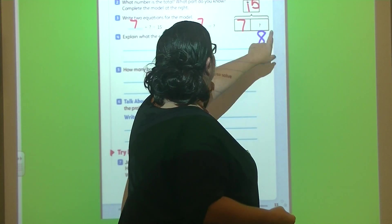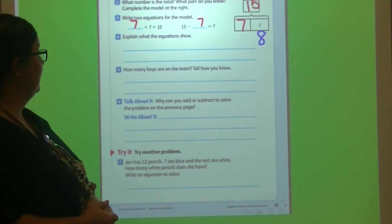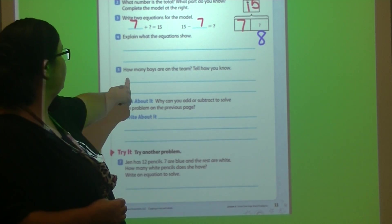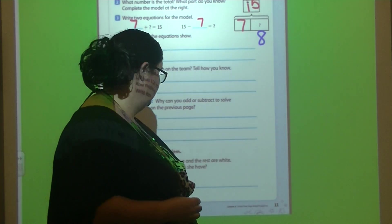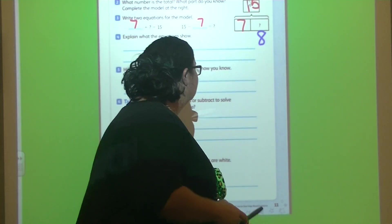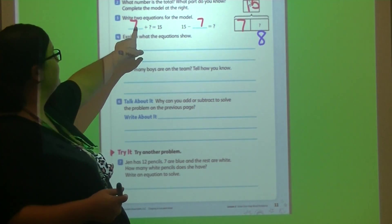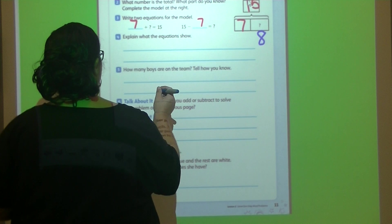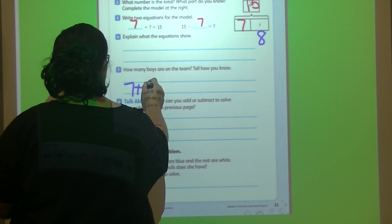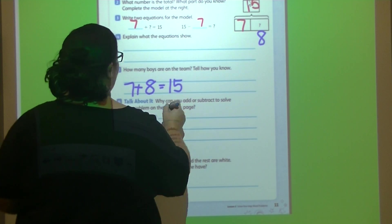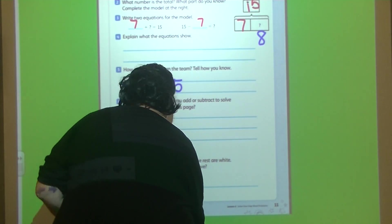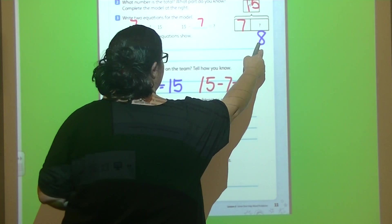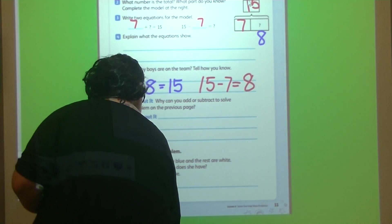So our missing number is 8. So how many boys are on the team? 8. Tell how you know. 7 plus 8 equals 15, or we could say 15 minus 7 equals 8. They're in the same family.